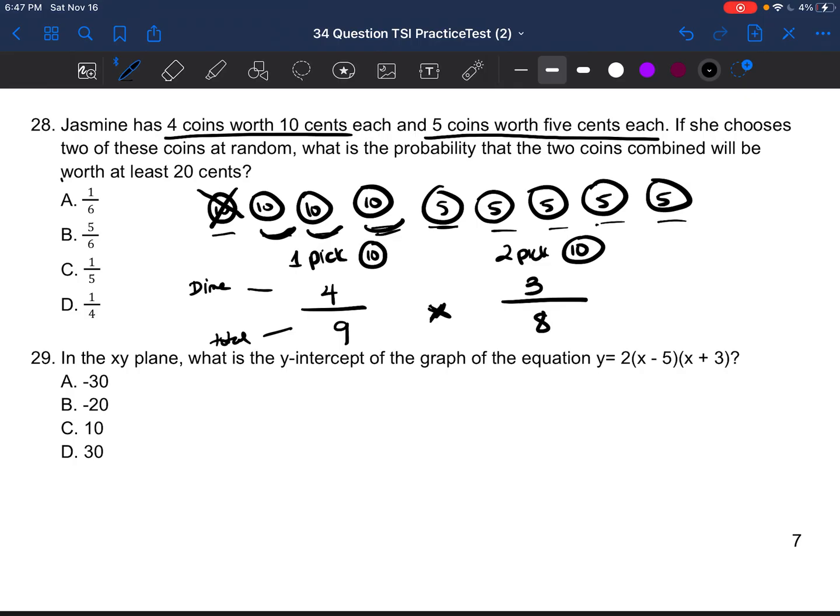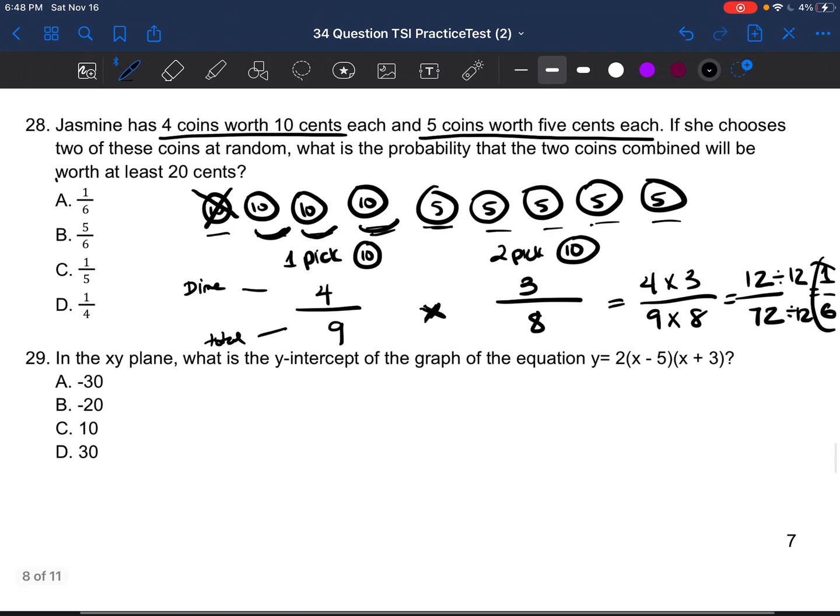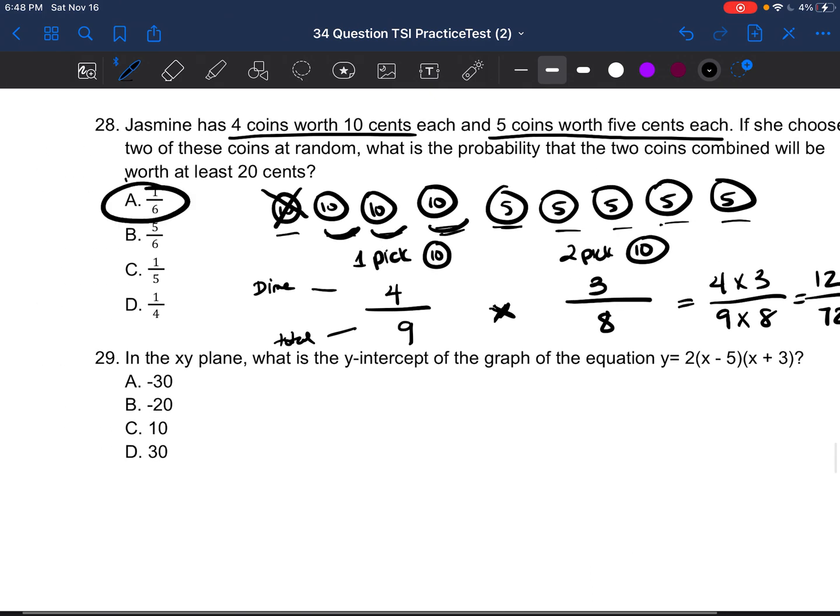So we're going to go ahead and now multiply these two fractions together. We're going to do four times three on the top, and nine times eight on the bottom. Four times three is 12. Nine times eight is 72. And then we're just going to make sure that we reduce. The top and the bottom can be divided by 12. 12 divided by 12 is one, and then 72 divided by 12 is six. So the answer is going to be one-sixth. So our answer is going to be A.